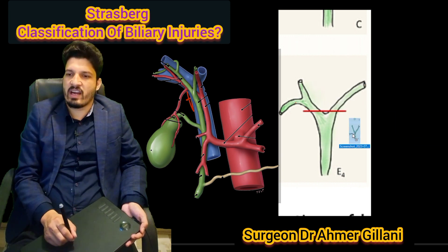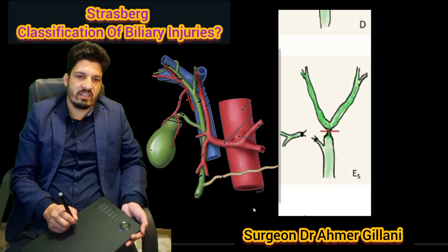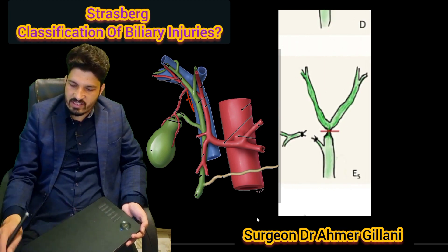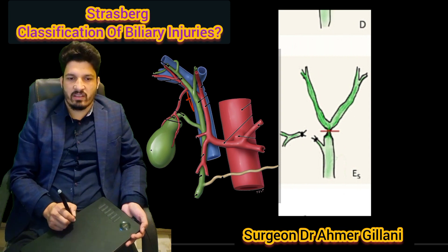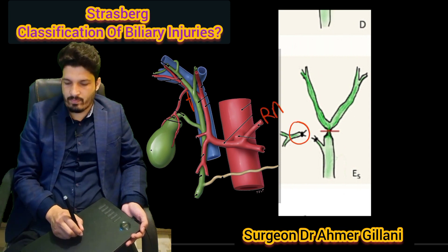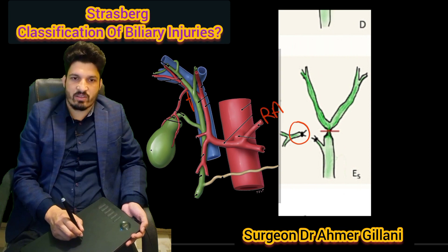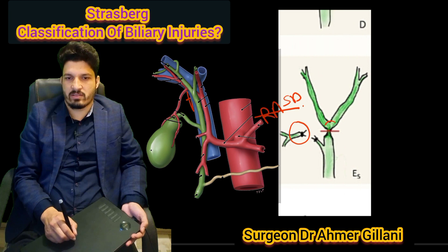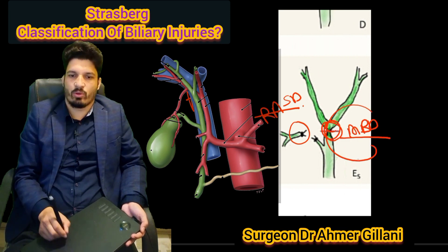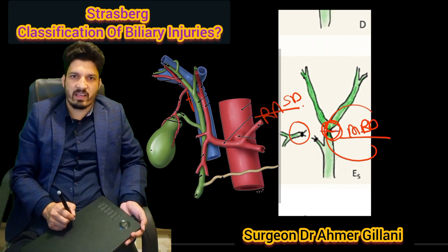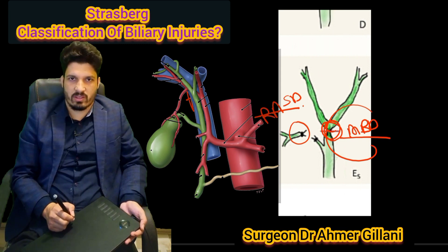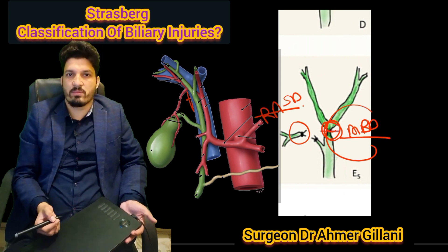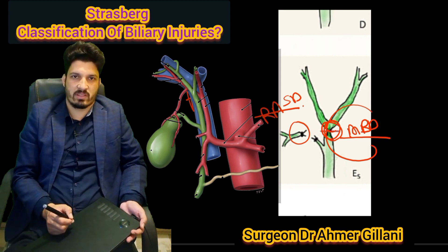Finally, this is E5 — the injury of the right aberrant sectorial duct with concomitant injury of the main bile duct. So this was all about the bile duct injuries. Hope you have understood something from our video, and if so, please subscribe to our channel, Sgt. Dr. Amargani. Thank you so much for watching.